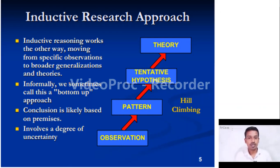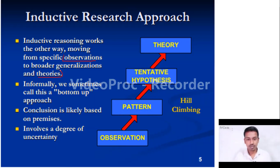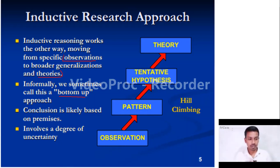In the inductive research approach, inductive reasoning works by moving from scientific observation to broader generalization or theories. Please remember: in the inductive approach, we are moving from observation to theories — observation to generalization — informally called a bottom-up approach. The conclusion is likely based on premises and involves a degree of uncertainty. The progression is: observation → pattern → tentative hypothesis → theory.